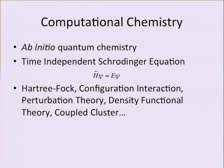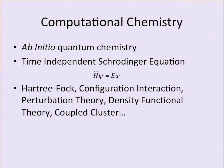Ab initio means from first principles. The starting point of what we do is the time-independent Schrödinger equation. We can apply the Born-Oppenheimer approximation to separate the nuclear and electronic wave functions. For chemists, we're really only interested in the electronic part, and even that is basically impossible to solve exactly.